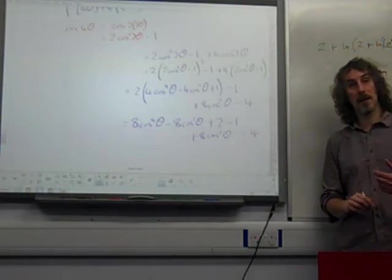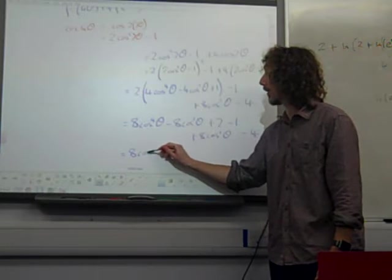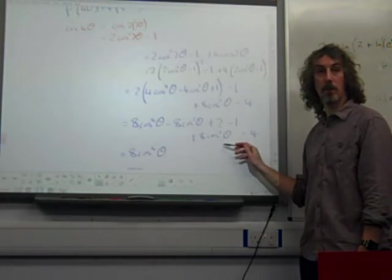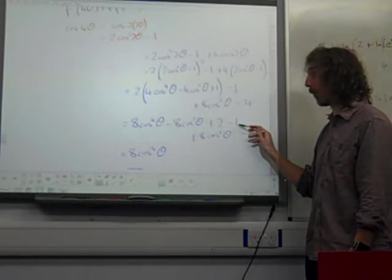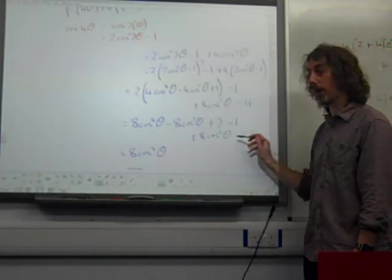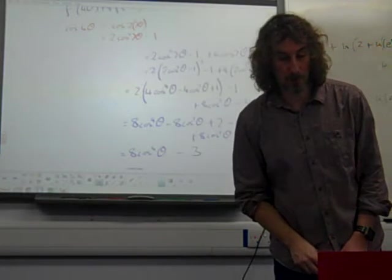And again, we've been really careful with all that. But we've got 8 cos to the 4 theta. That bit cancels out that bit. So we've got 8 cos squared plus 2. Take away 1. That's 1. Take away 4. This would be minus 3. And that was what we were supposed to show.